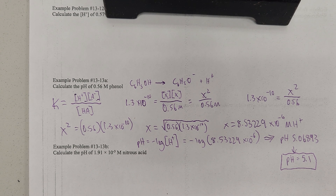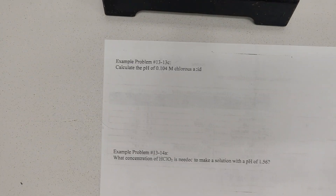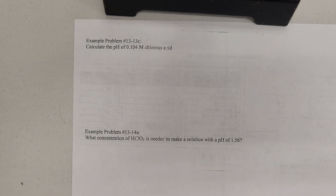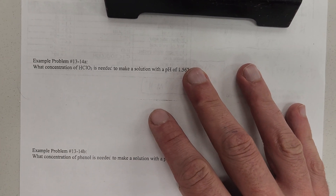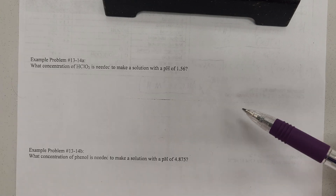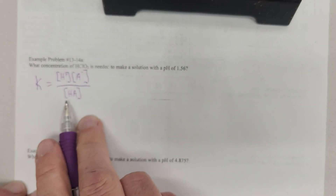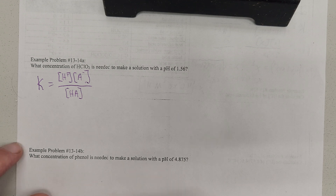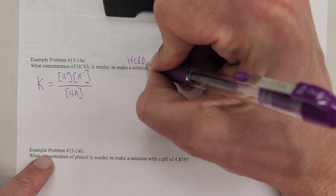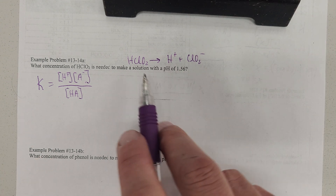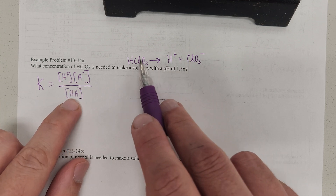That is going to work the same way for similar questions. Now let's do one of these as a further example, because this will require a different method of calculation. You can still use the same table, and it's still a weak acid, which means Ka equals hydrogen ion concentration times anion concentration over the original acid concentration — the equilibrium acid concentration. HClO2 is going to dissociate to be hydrogen ion and the anion, which is ClO2 minus.